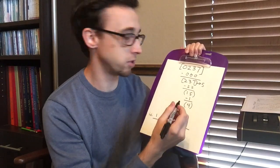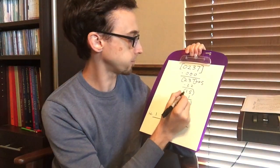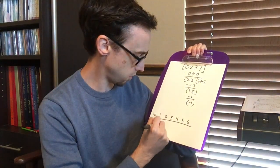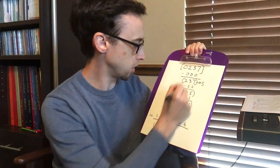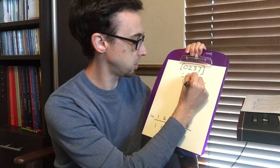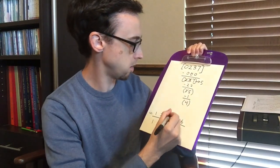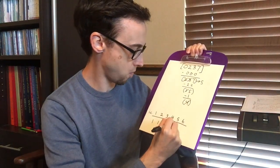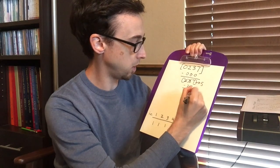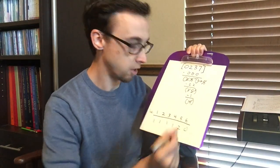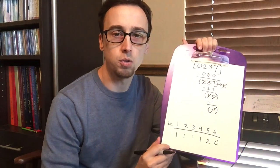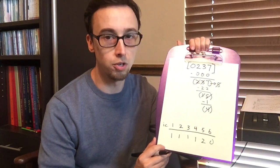And then we just tally the numbers up. So we have 1 Interval Class 1, 1 Interval Class 2, I'm going to cross these out so we don't get confused, 1 Interval Class 3, 1 Interval Class 4, we have 2 Interval Class 5s, and no 6s. So the Interval Class Vector is 1, 1, 1, 1, 2, 0.